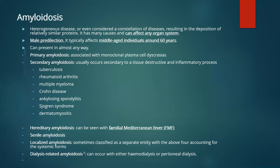Amyloidosis has been subclassified into primary amyloidosis, when it is a monoclonal plasma cell dyscrasia, and secondary amyloidosis, which is usually related to a chronic inflammatory process including tuberculosis, rheumatoid arthritis, multiple myeloma, or any other form of chronic inflammatory disease.